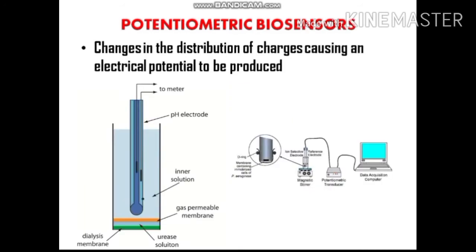Next is the potentiometric biosensor, which is based on changes in distribution of charges causing an electric potential to be produced. For example, to measure urea: urea crosses a dialysis membrane and reacts with a urease solution, producing ammonia and carbon dioxide. The carbon dioxide interacts with a pH electrode, altering the pH and causing a potential difference. The resulting electric current is directly proportional to the urea concentration and is fed to a digital display.